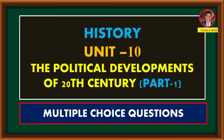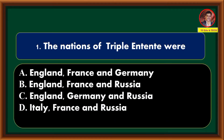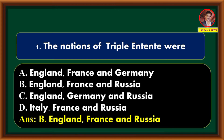Welcome to the first part of 10th History, Unit 10: The Political Developments of the 20th Century. In this video, let us see important multiple choice questions from this lesson. First question: the nations of the Triple Entente were — England, France and Germany; England, France and Russia; England, Germany and Russia; Italy, France and Russia. Correct answer is option B: England, France and Russia.